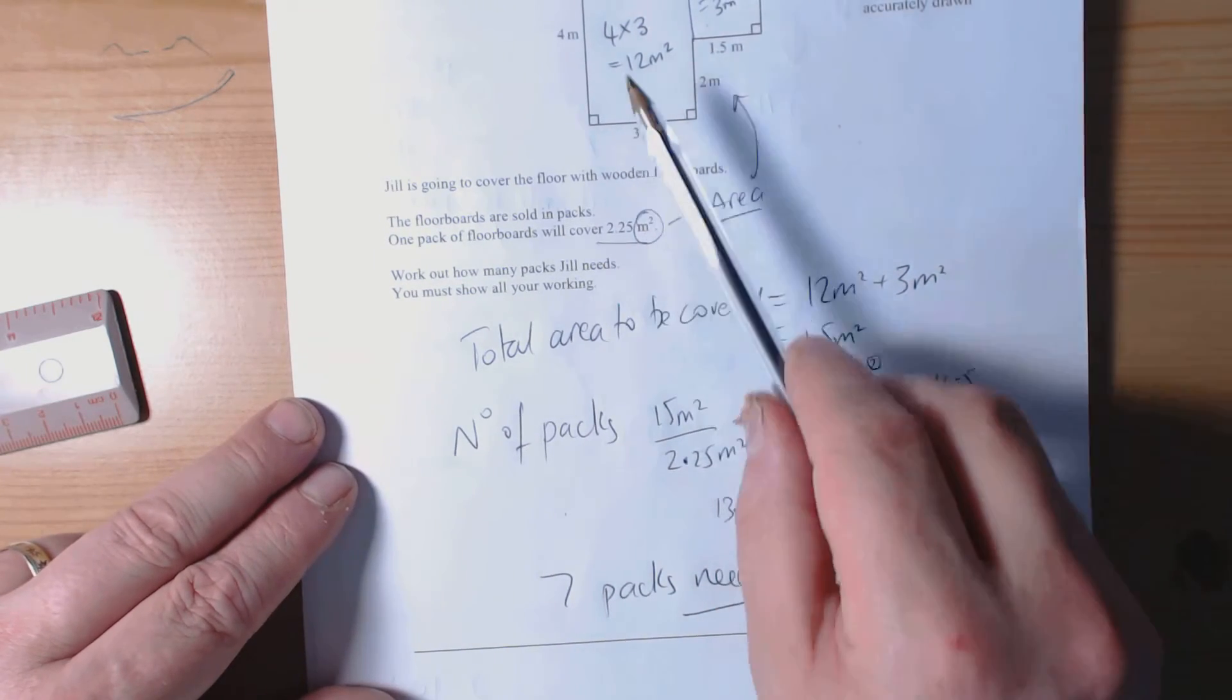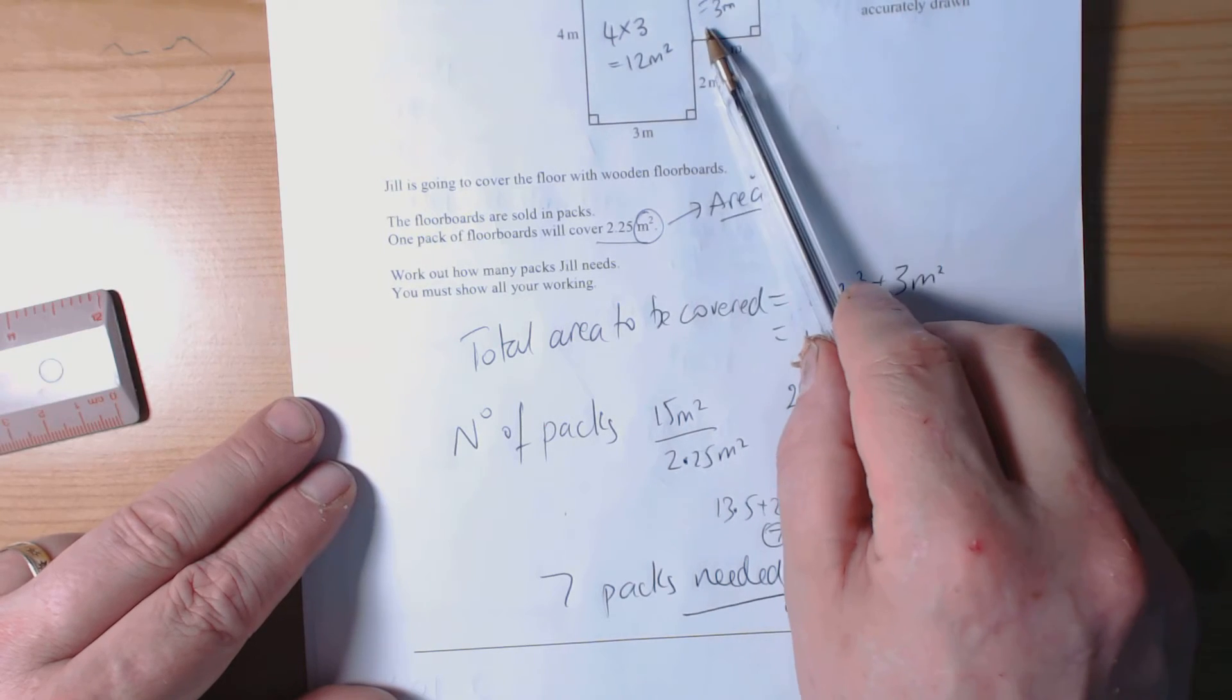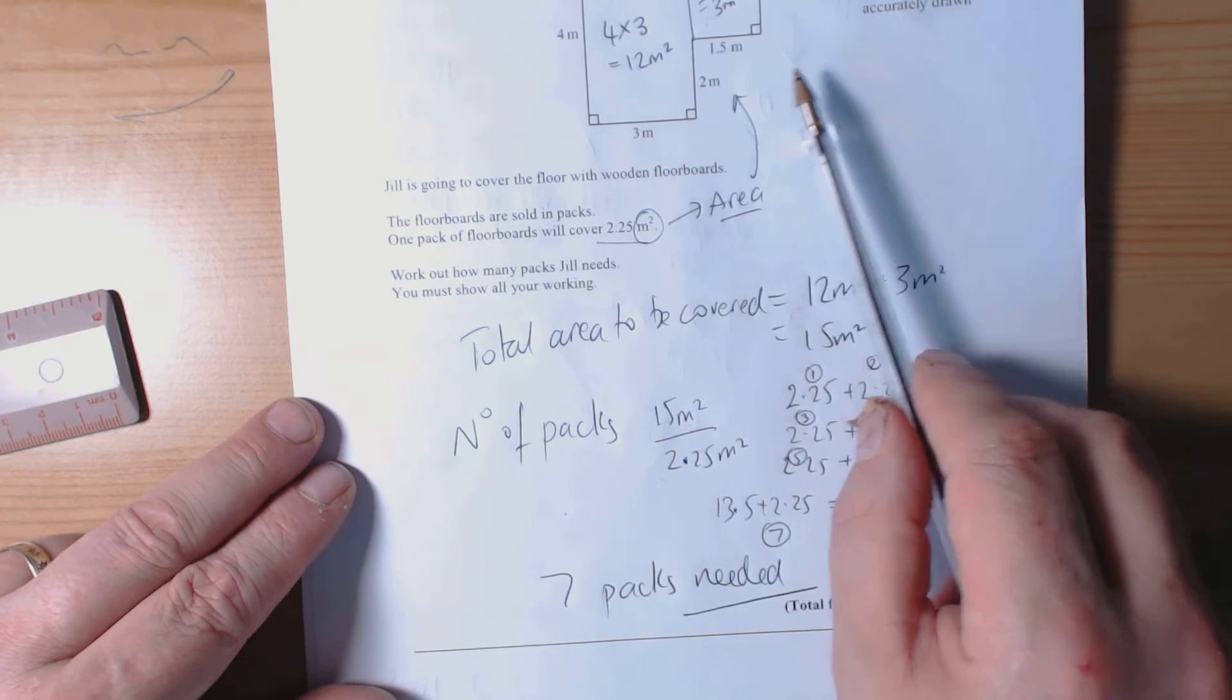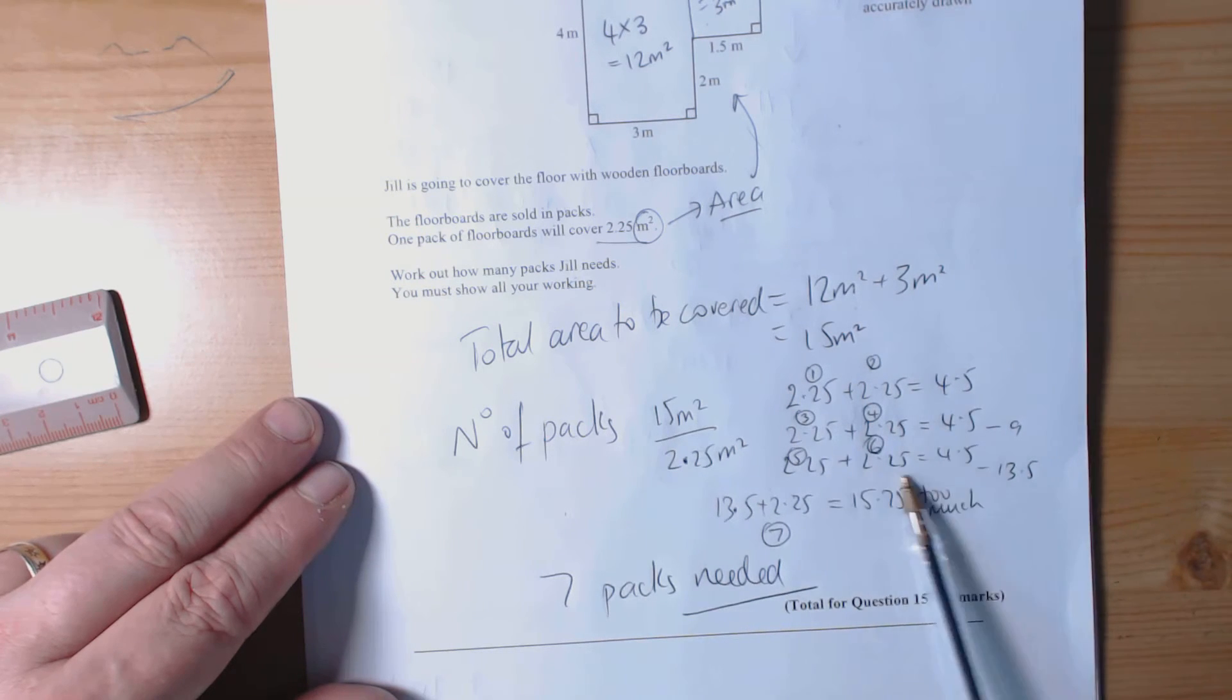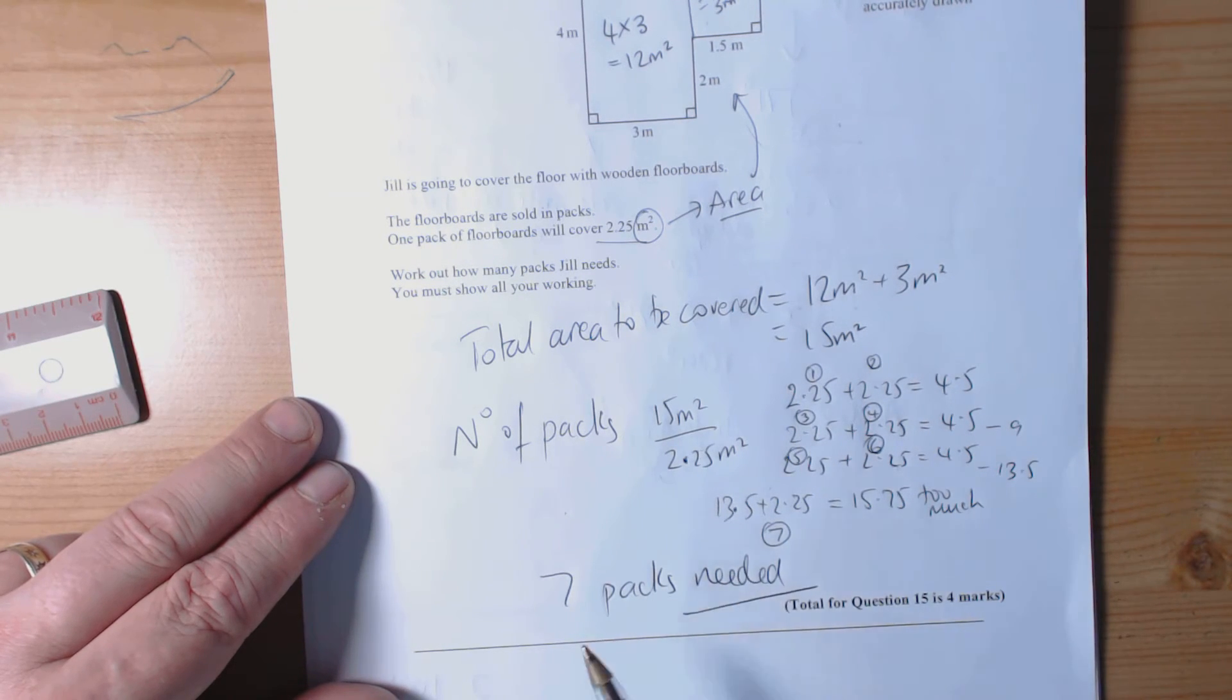But once we've realized the context is area, work out the area of the shape by breaking it up into its parts, and then we can work out how many 2.25s go into there. Adding it was probably the simplest way to do it rather than long division, and we found that we needed seven packs. Six packs wasn't quite enough, seven packs is just slightly too much, which is fine.